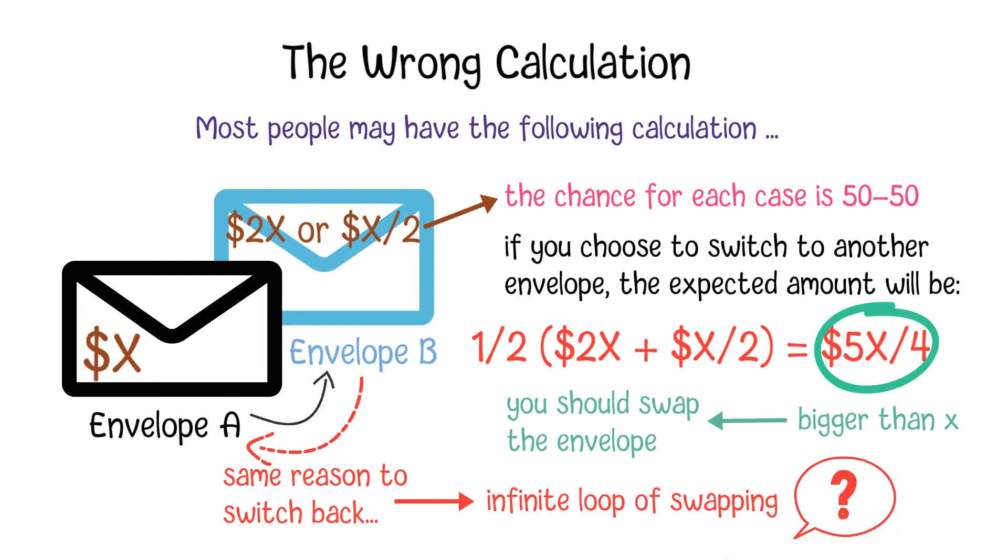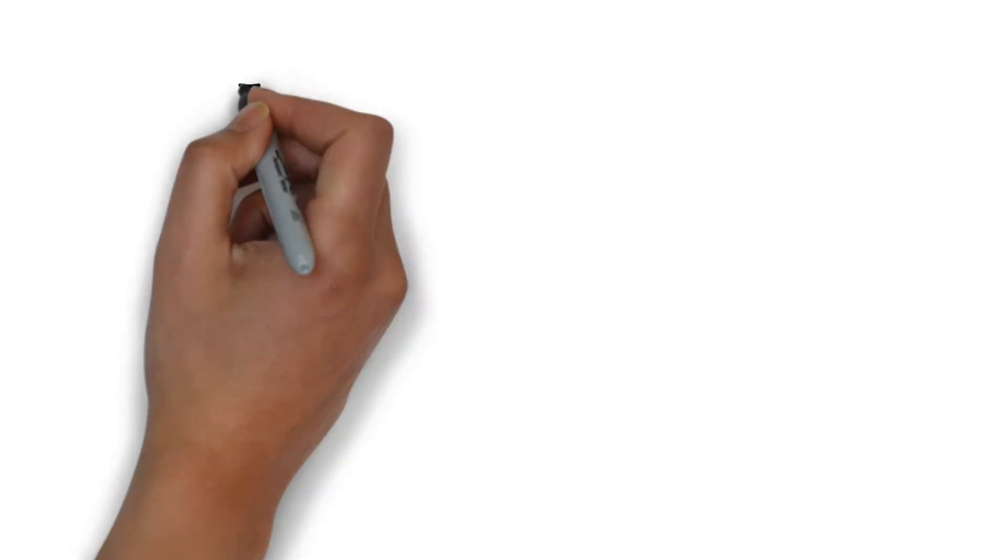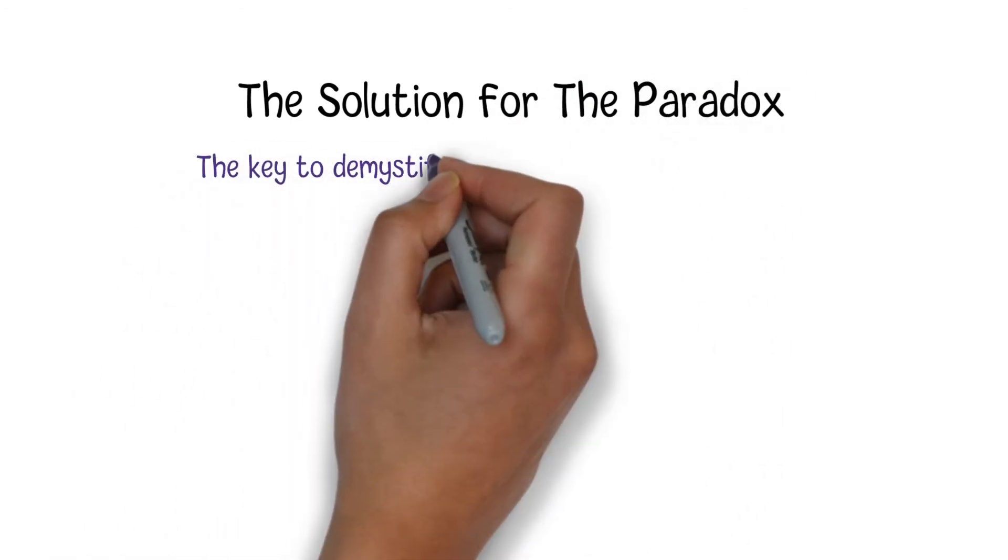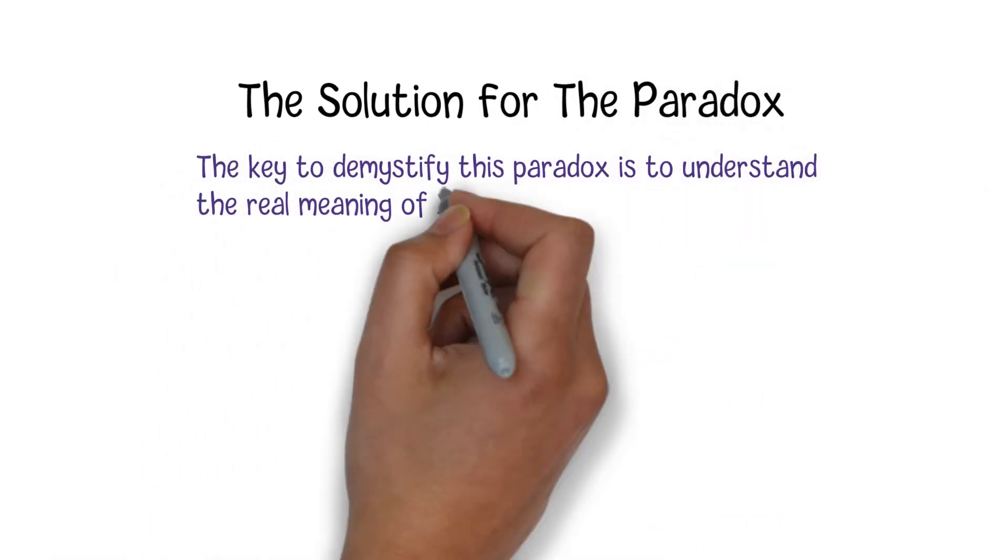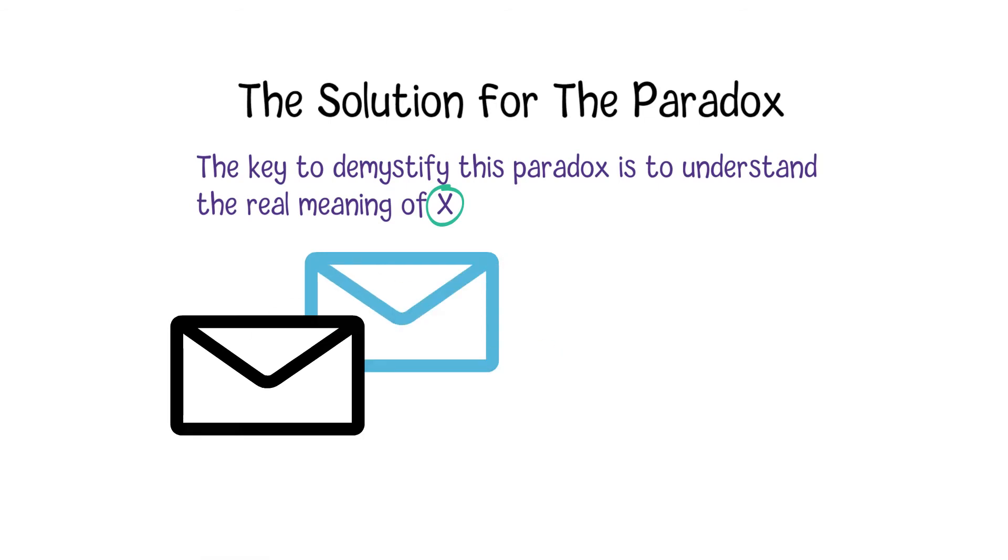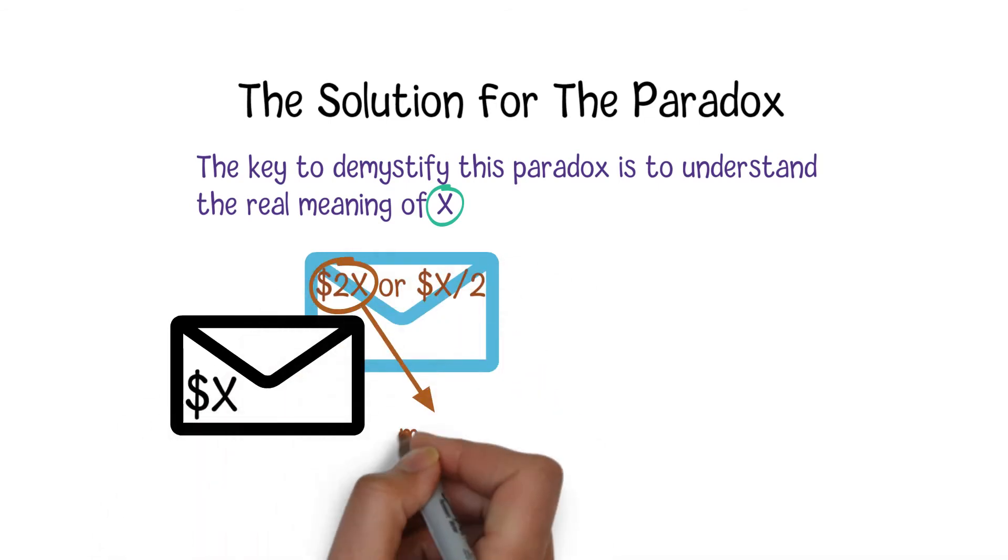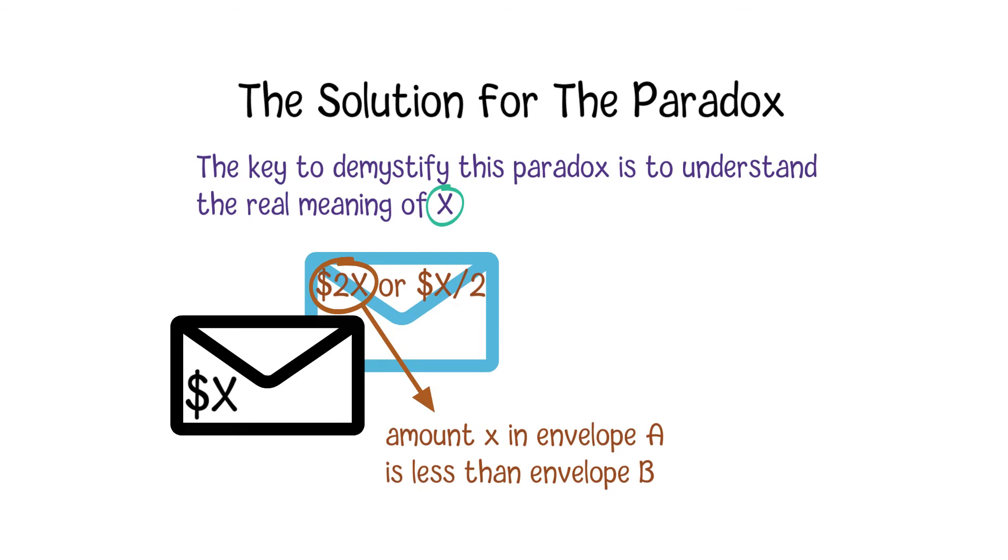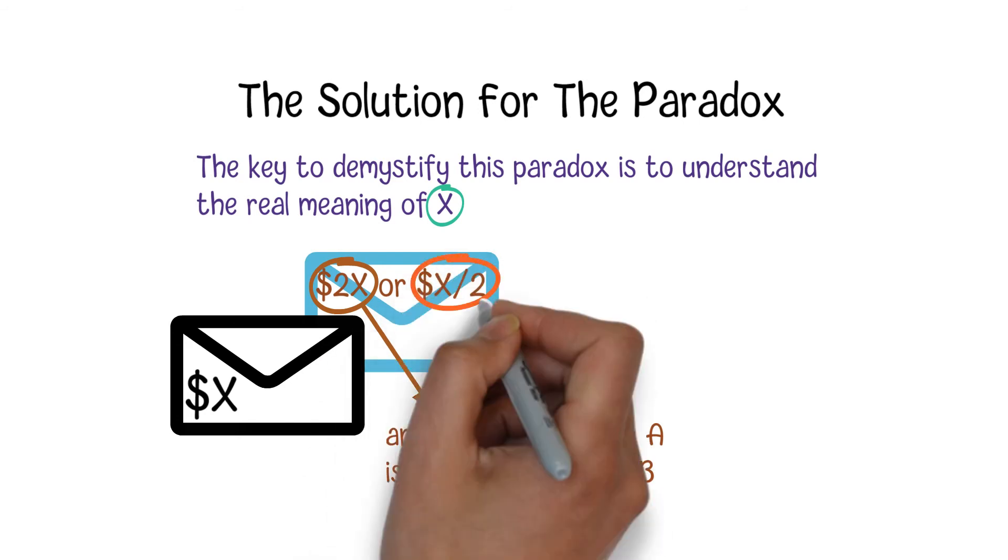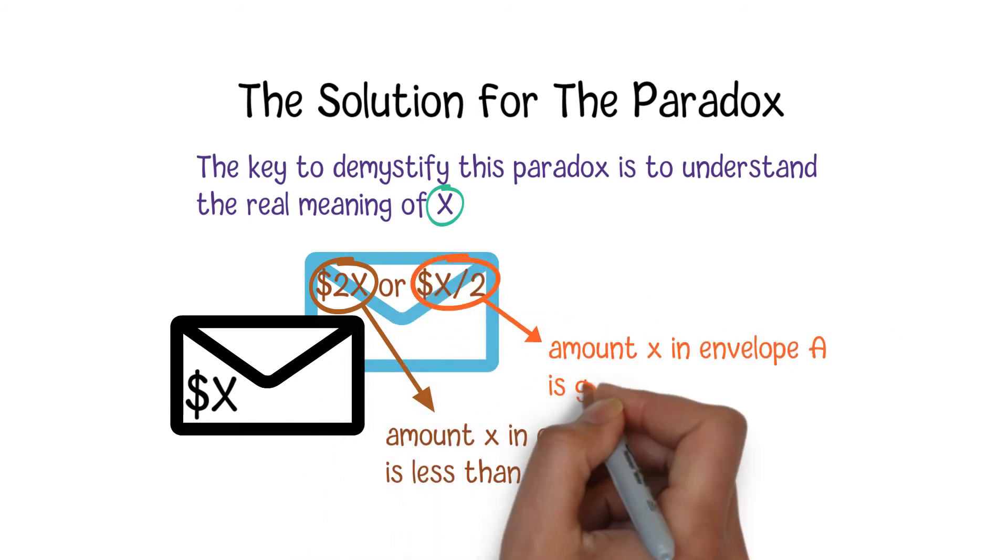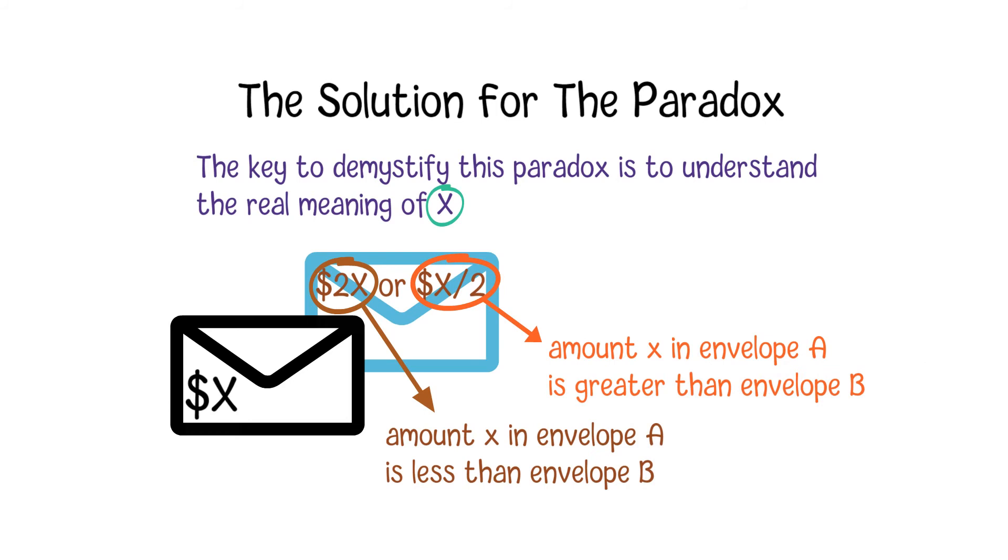The key to demystify this paradox is to understand the real meaning of X. The first X in the equation indicates that the amount X in envelope A is less than envelope B. However, the second X in the equation indicates that the amount X in envelope A is greater than B.